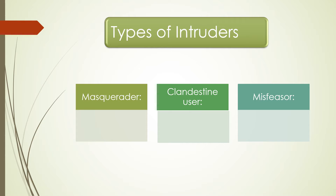Some examples of intrusion include: performing a remote root compromise of an email server, defacing a web server, guessing and cracking passwords, copying a database containing credit card numbers, giving sensitive data including payroll records and medical information without authorization, running a packet sniffer on a workstation to capture usernames and passwords, using a permission error on an anonymous FTP server to distribute pirated software and music files, and dialing into an unsecured modem and gaining internal internet access.